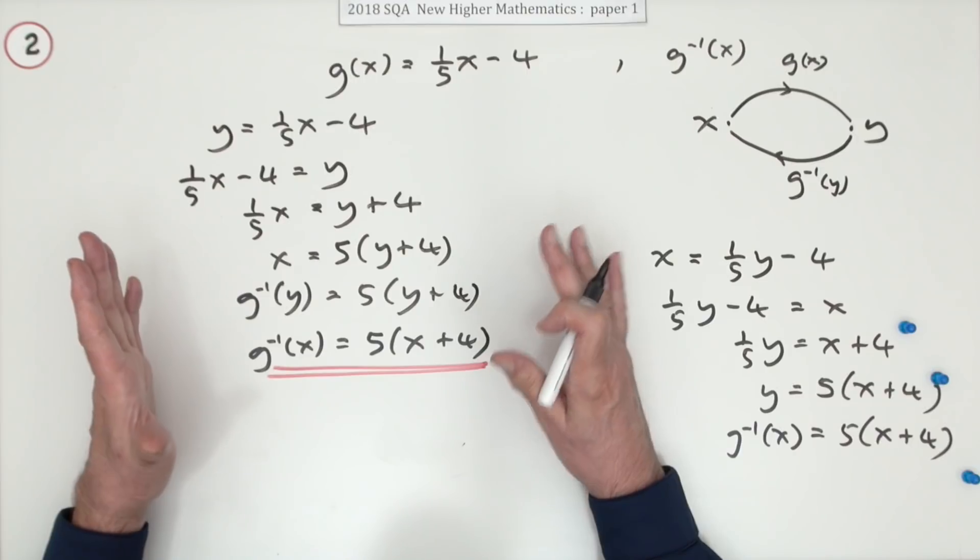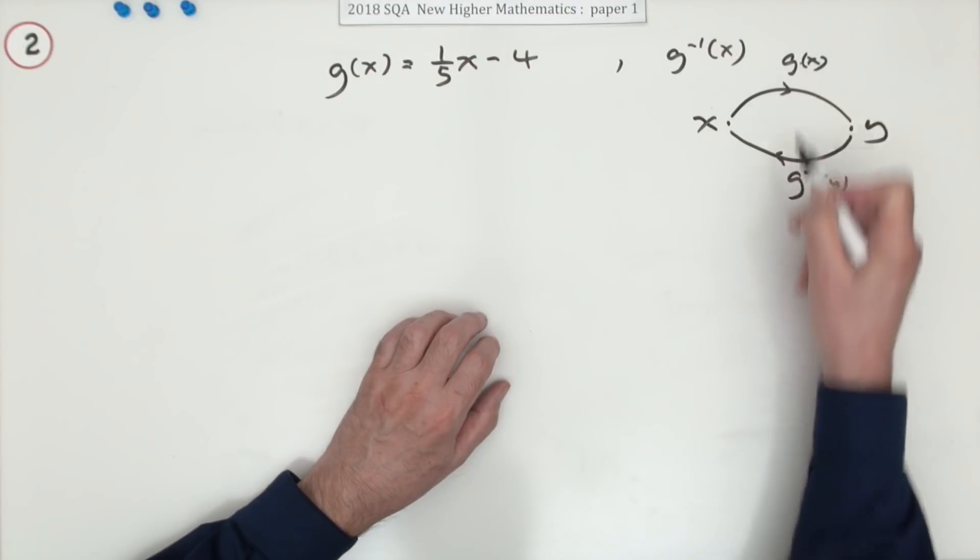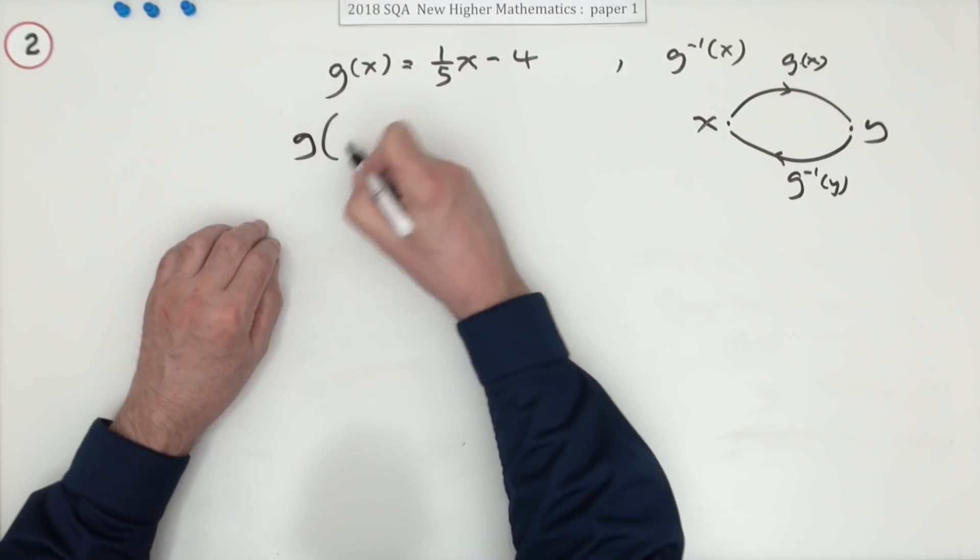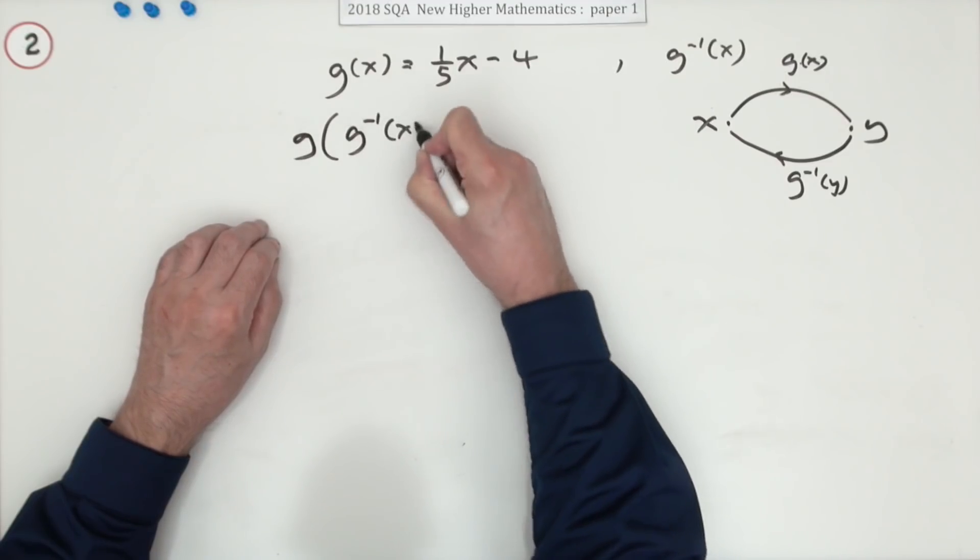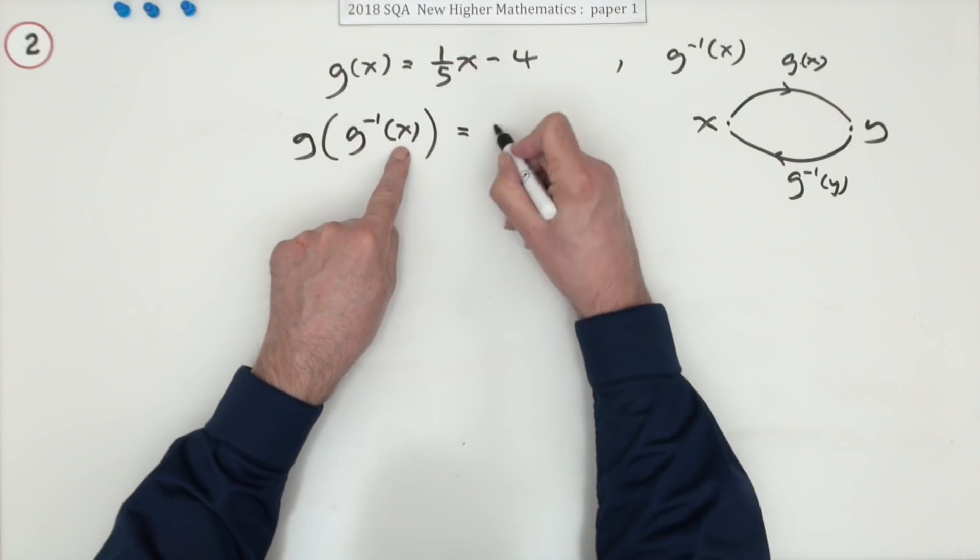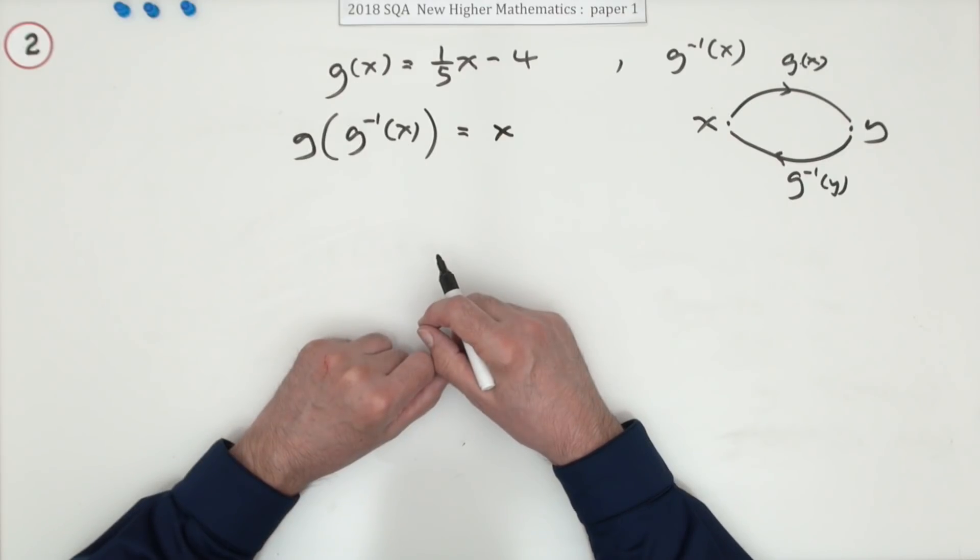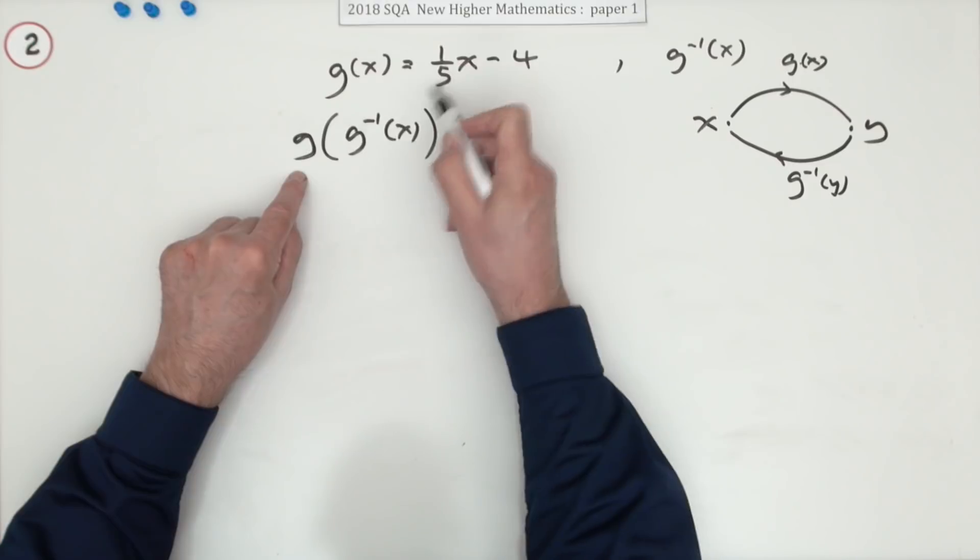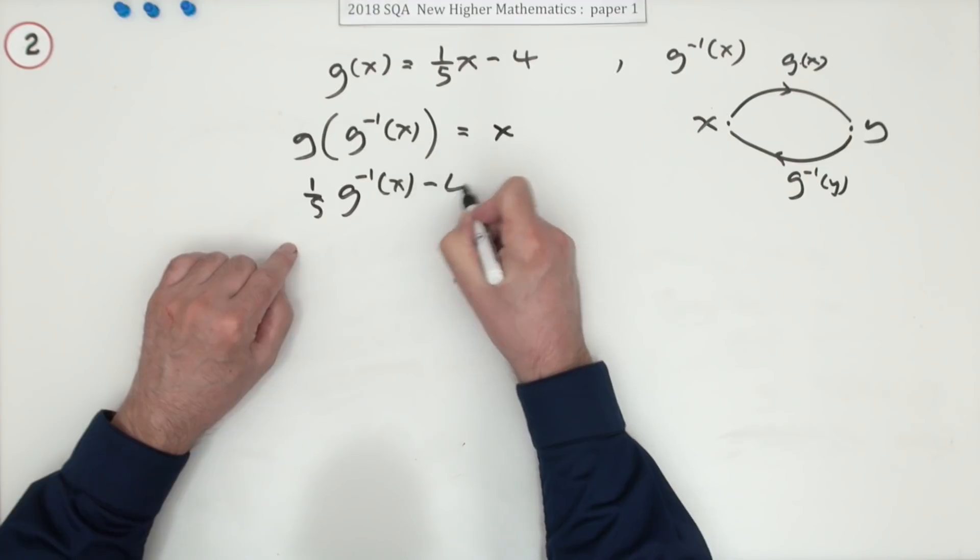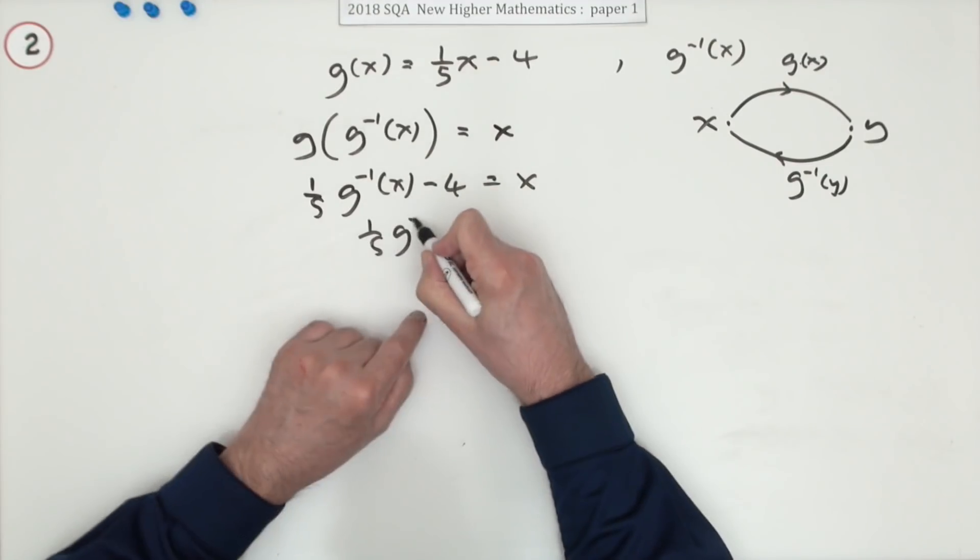However there's a more satisfactory way which is to say this: these functions undo each other, so if you applied g, which you know, to its inverse, that should give you back this number that the inverse was holding - it undoes its hold on it. And then just follow this: what does g do? It does a fifth of whatever it is, so a fifth of the inverse take away four equals x.